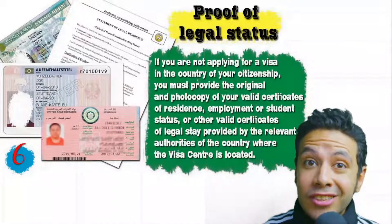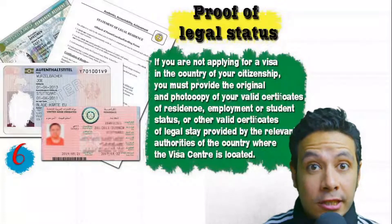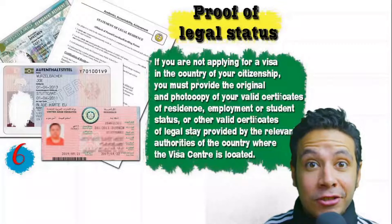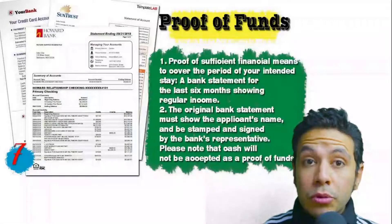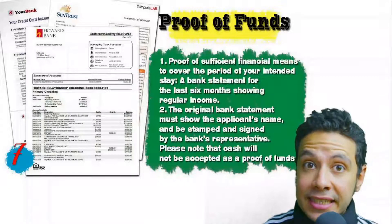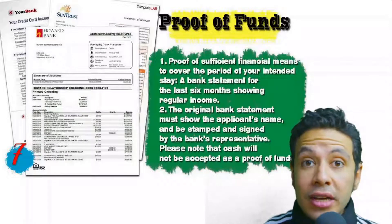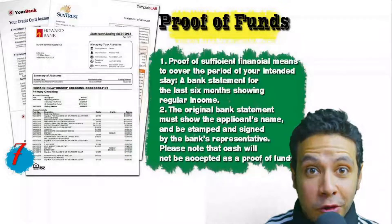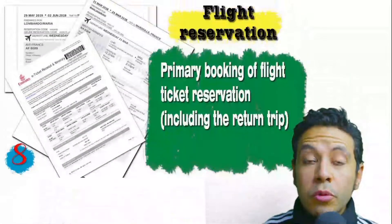In some cases you might be applying from a country different from your own — at that point you need to provide proof of legal status, which is a certificate of legal residence in that country. A valid residence visa can also be accepted in some cases. You will also need to provide proof of sufficient funds: a bank statement showing your balance for at least six months. The original bank statement must show your name and be signed and stamped by bank representatives. Cash will not be accepted as proof of funds.